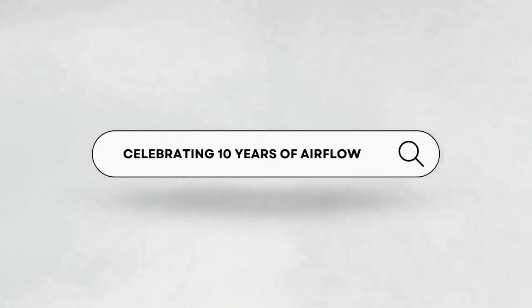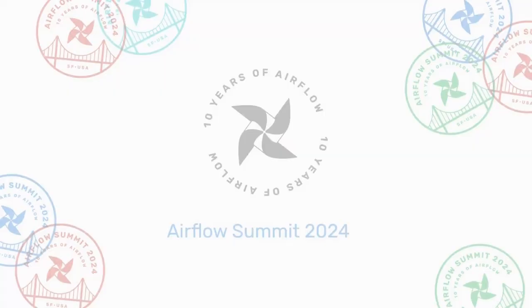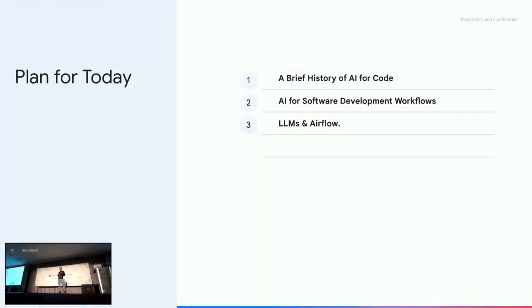It's great to be here. The plan for today is to cover three topics: we'll get into LLMs and AI for code more generally, starting with a look back at some of the ideas developed in this area over the last 10 years or so — the early efforts incorporating AI into programming languages and software development. Then I'll talk about what we want to do with these models, share work we've been doing at Google, and at the end spend a bit of time on LLMs and Airflow.